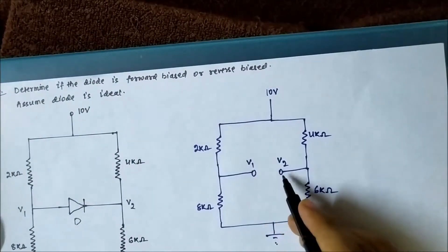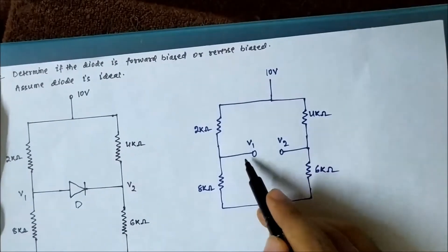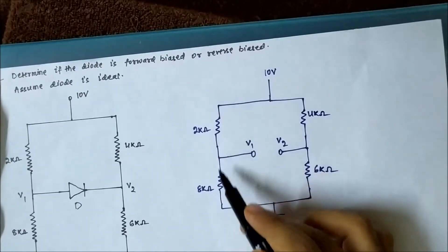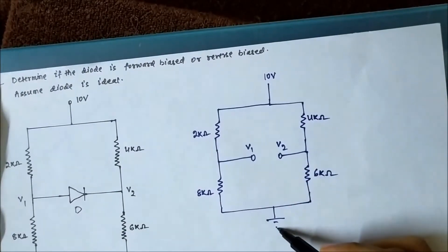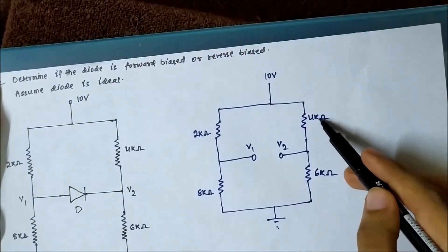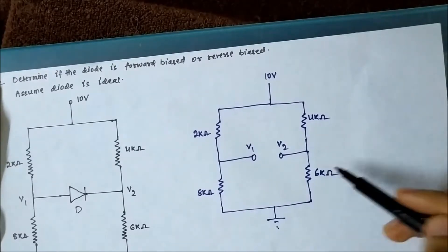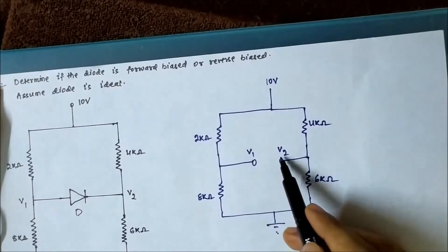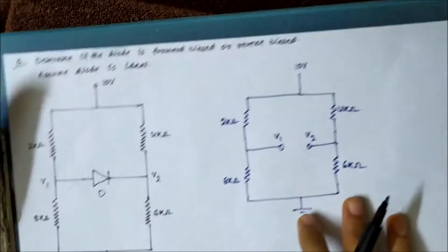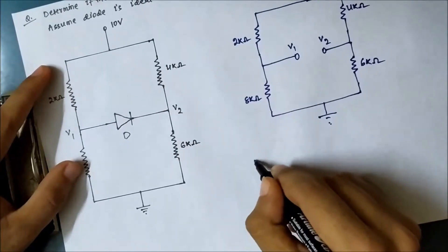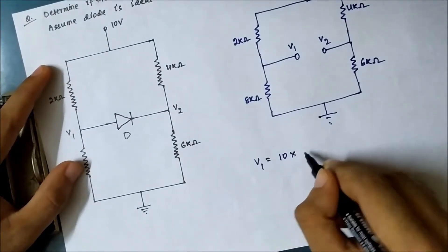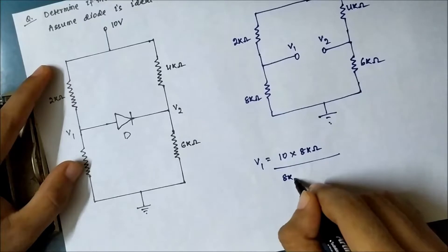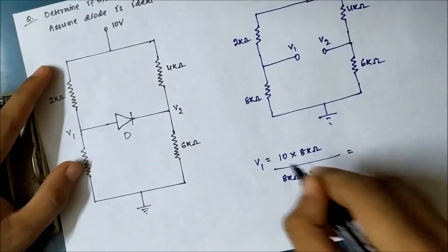We have to determine the voltage between points V1 and V2. The two kilo ohm and eight kilo ohm resistors are connected in series between ten volts and ground. Similarly, the four kilo ohm and six kilo ohm resistors are also connected in series between ten volts and ground. We can determine V1 and V2 by applying the voltage division rule. V1 will be ten volts times eight kilo ohm divided by eight kilo ohm plus two kilo ohm.